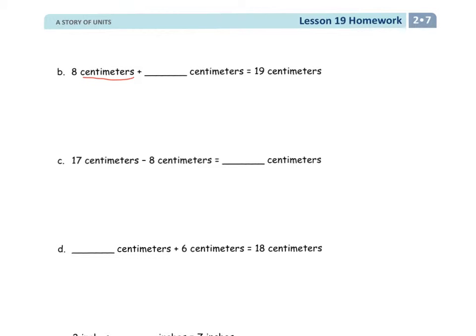8 centimeters plus something equals 19 centimeters. Again, we're using the same units across the board, so we can just add to 8 to get to 19. I can use the arrow way if I need to, to get to my 10, and then 10 to 19 is plus 9. So 2 plus 9 is 11. It's 11 centimeters.